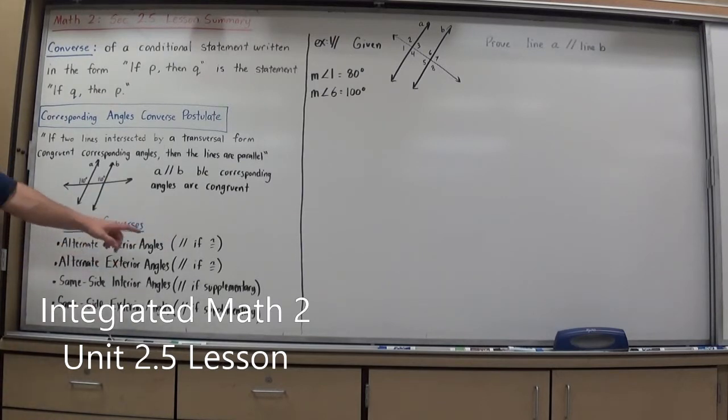If the alternate exterior angles are congruent, the lines must be parallel. Same side interior angles, if the same side interior angles are supplementary, then they must be parallel. And the same side exterior.